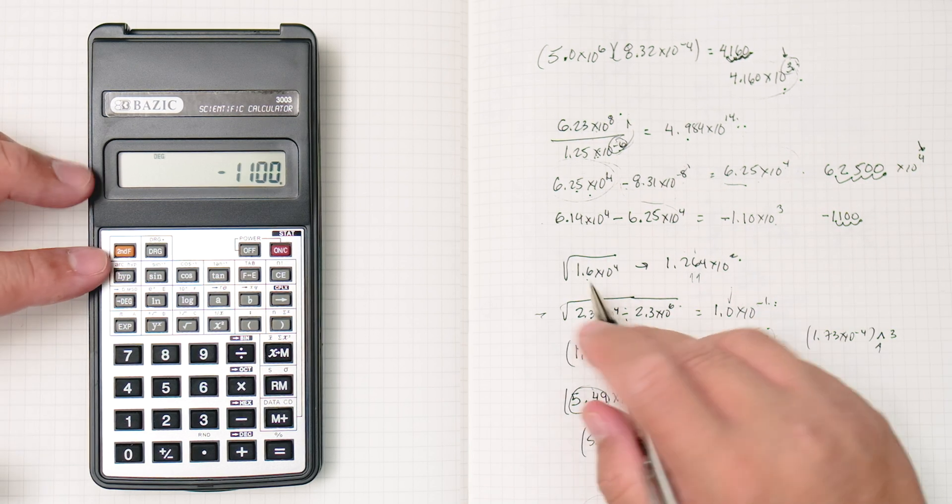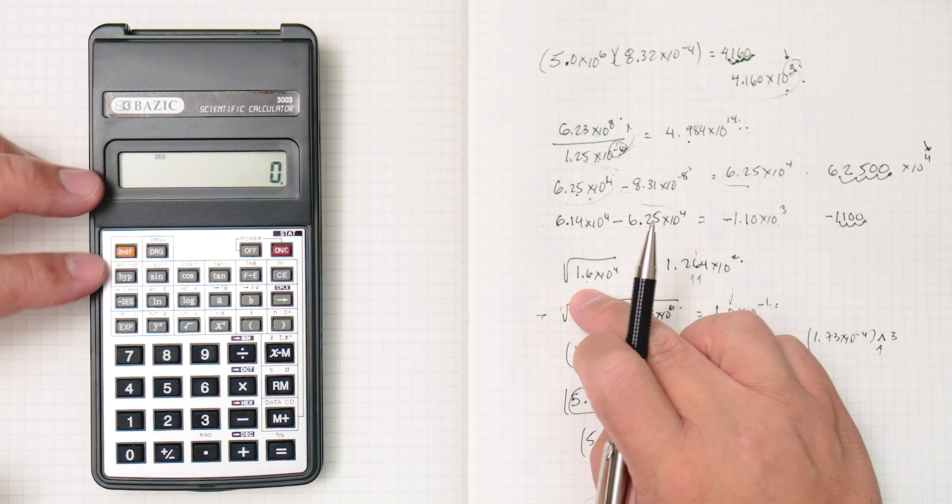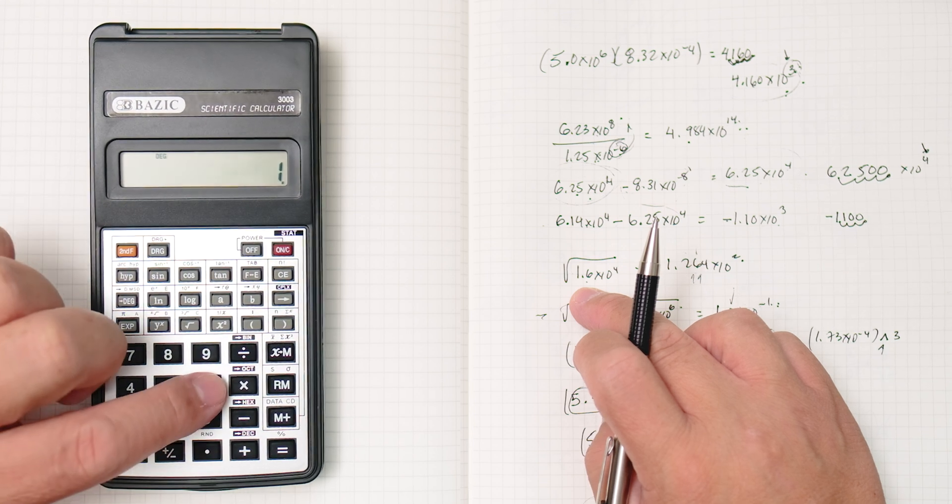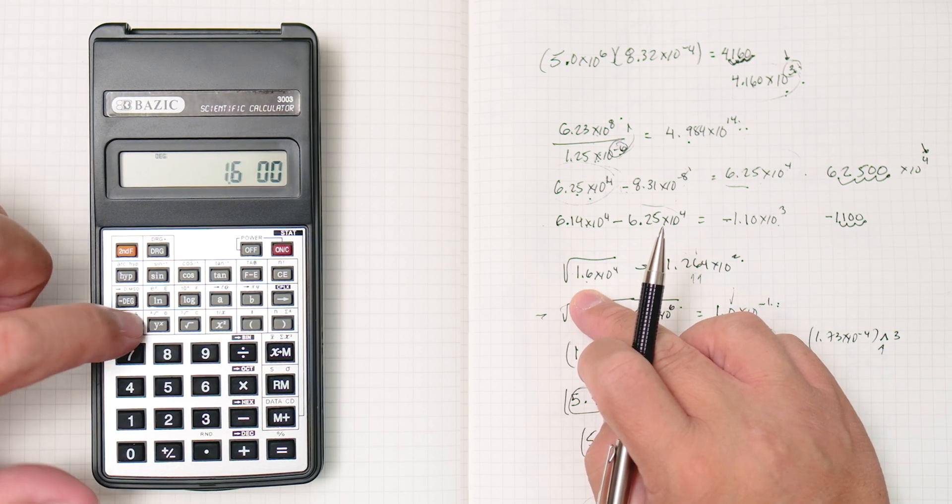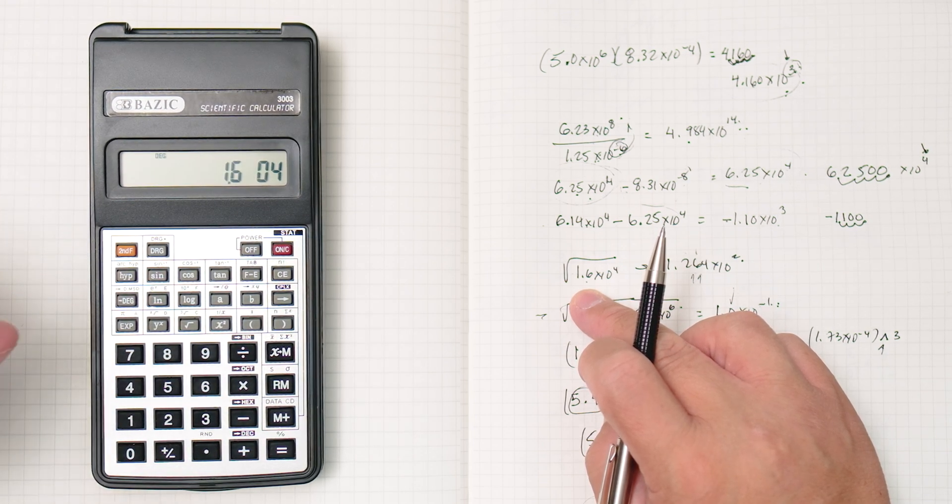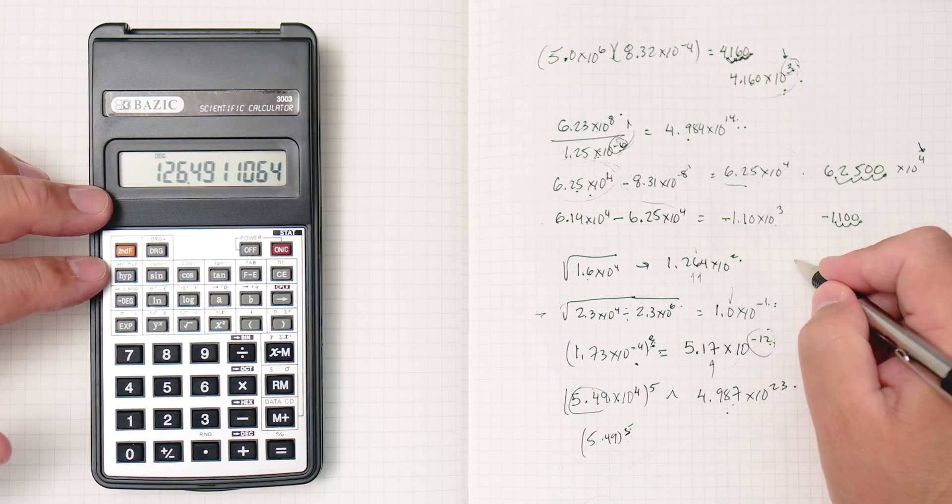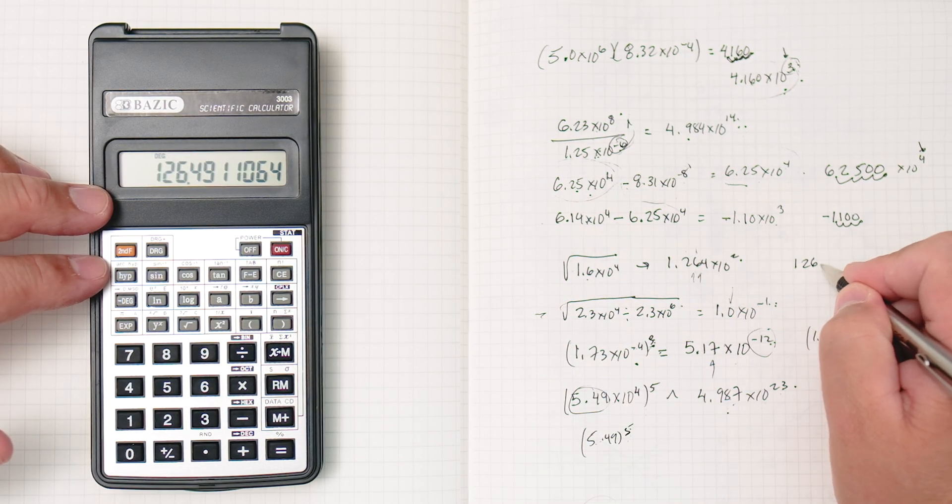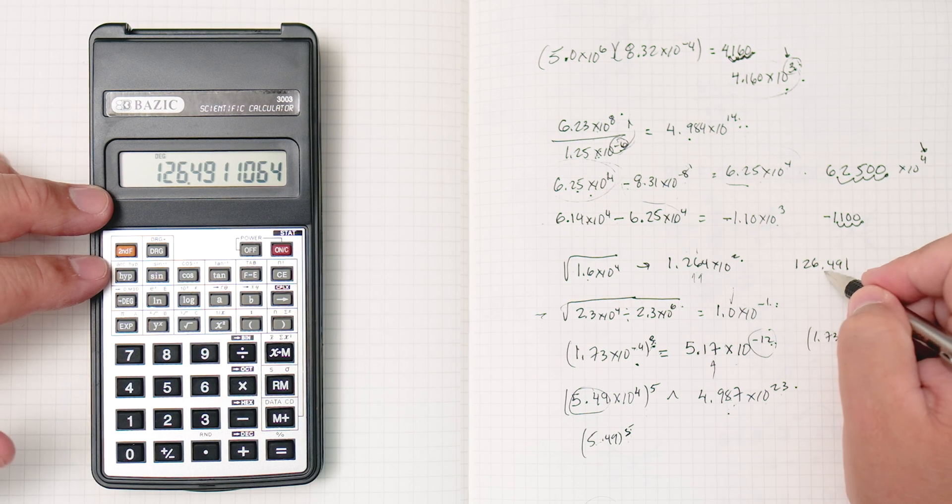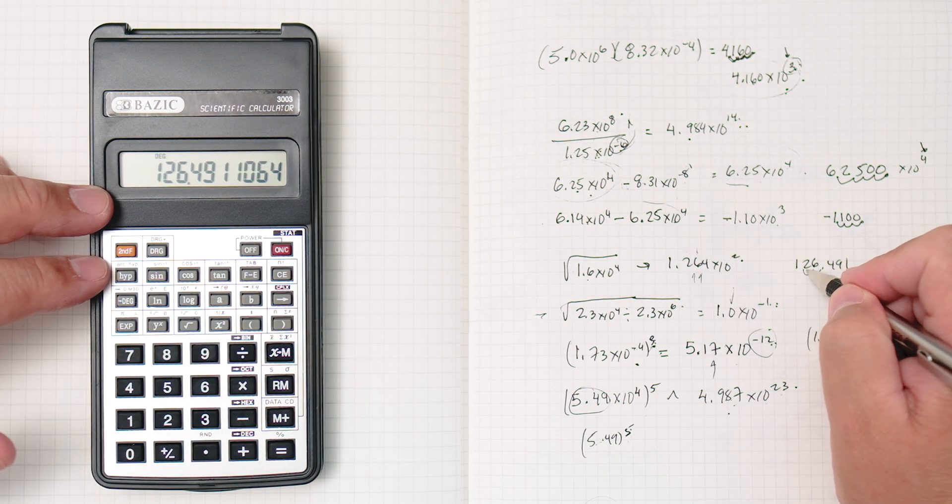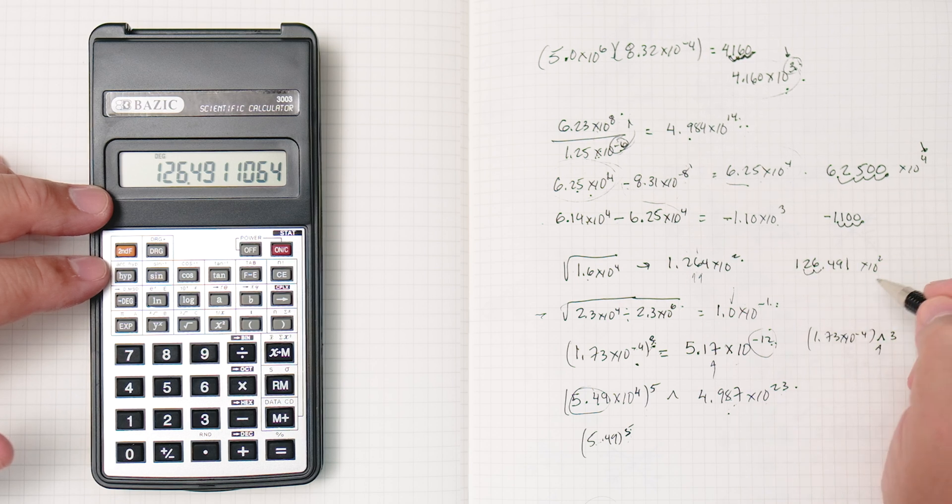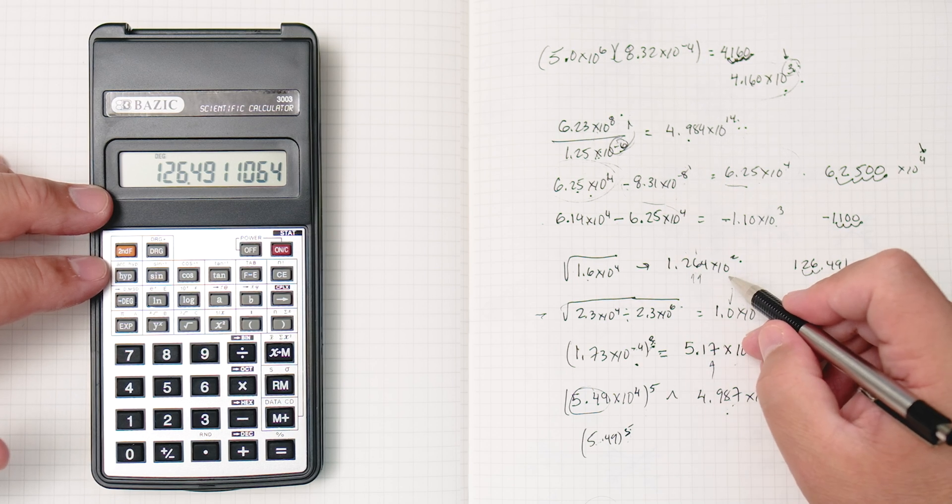Okay. Let's do this one. Let's see if we can do this one. Clear. We got to put the number in first, 1.6 times 10 to the 4th, and then take the square root. And that's going to be 1, 2, 6.491, and again, move the decimal place two places, make this smaller, make this number smaller, and then the exponent bigger. So that's the answer.